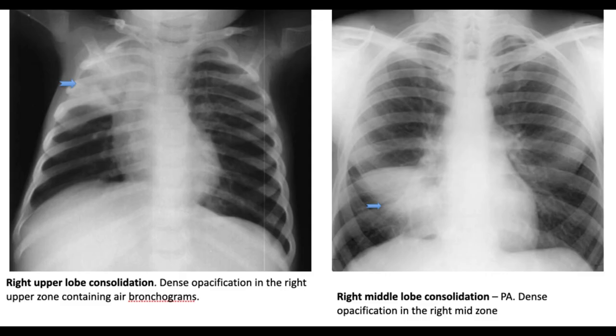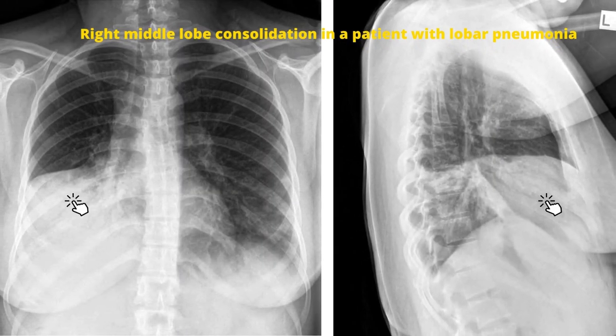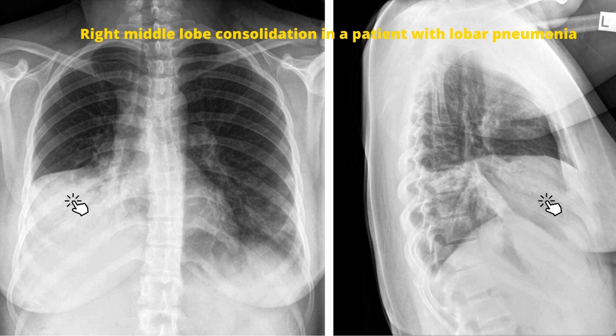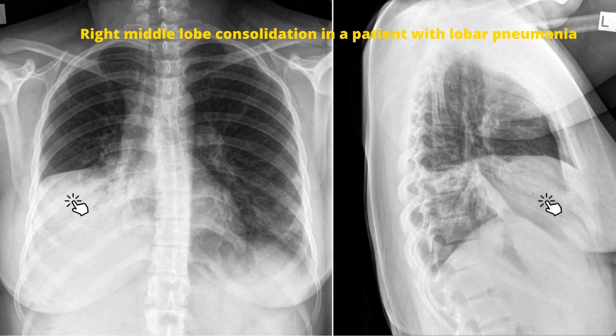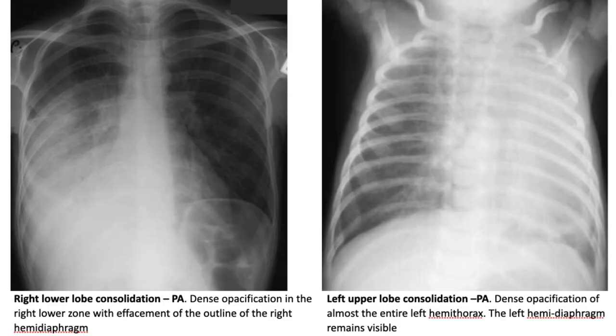A consolidation appears as a dense, homogeneous area of opacity on the chest x-ray. It occurs when the air spaces within the lung tissue fill with fluid, blood, pus, or other substances, replacing the normal air-filled alveoli. Consolidations are typically associated with infections such as pneumonia, but can also be caused by pulmonary edema or tumors.